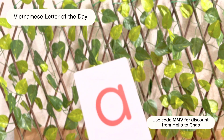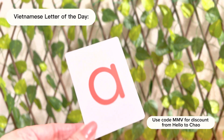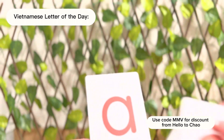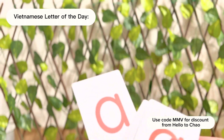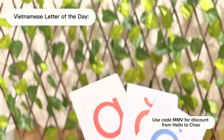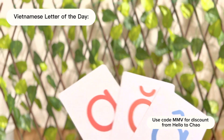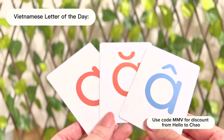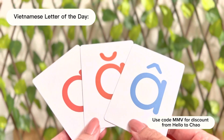In Vietnamese, there are three types of A's: A, A, and Ă.